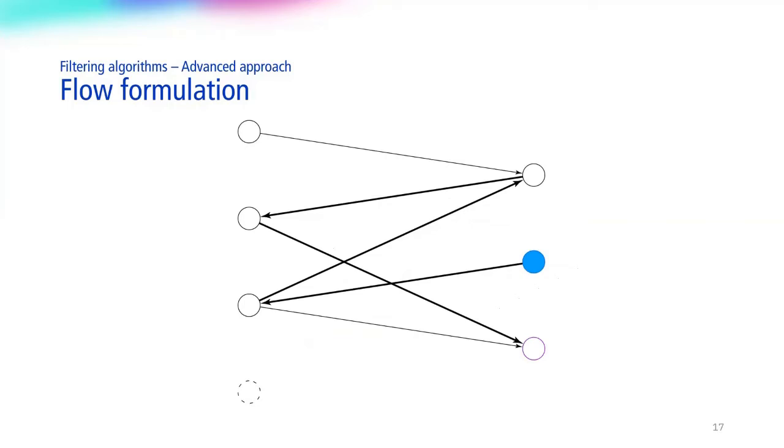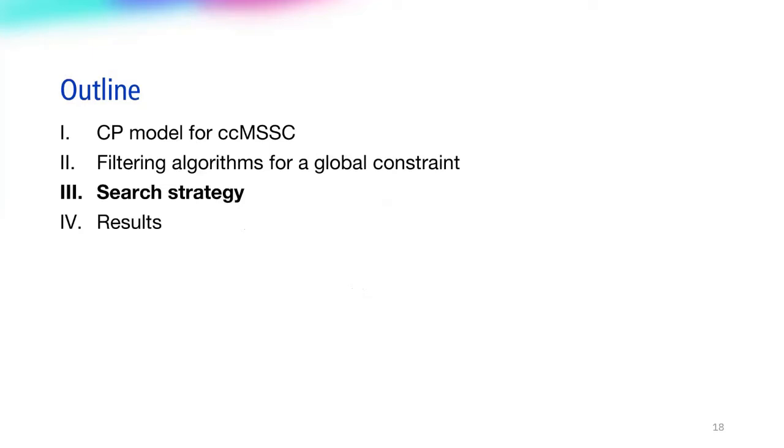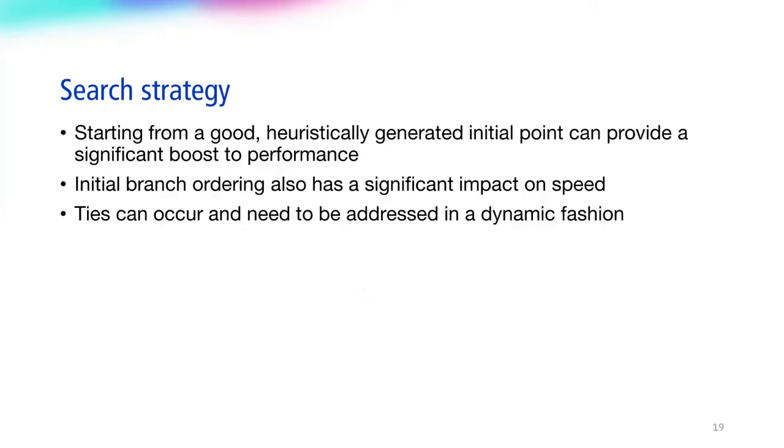A more straightforward way to look at this is to run a minimum weight path algorithm on the residual graph as shown. This algorithm must support negative weight edges, making algorithms like Dijkstra's inadequate. Now that we have presented the constraint part of our work, let's talk about the equally important search strategy.